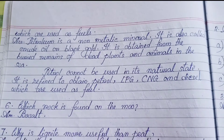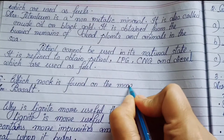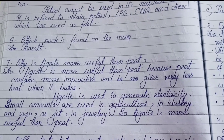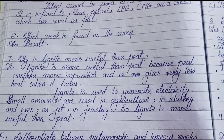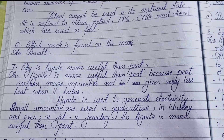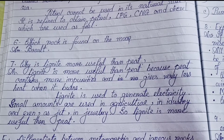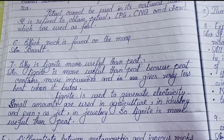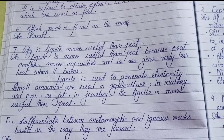Number six: Which rock is found on the moon? — Basalt. Number seven: Why is lignite more useful than peat? Lignite is more useful than peat because peat contains more impurities and gives very less heat when it burns. Lignite is used to generate electricity, and small amounts are used in agriculture, industry, and even as jet in jewelry.